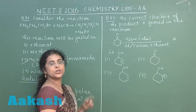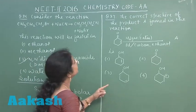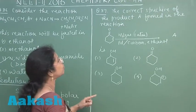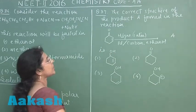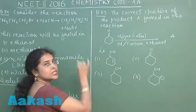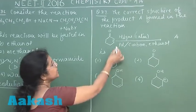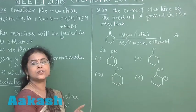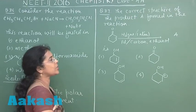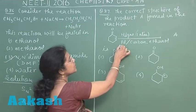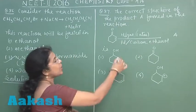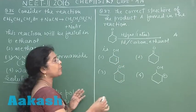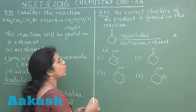Next question is question number 87. The correct structure of product A formed in the reaction. This is the structure of compound which is containing carbon-carbon double bond as well as carbonyl group. Reagent taken is hydrogen in gaseous state at 1 atmospheric pressure and catalyst is palladium mixed with carbon and ethanol. Product of reaction is A, we have to identify the structure of product.